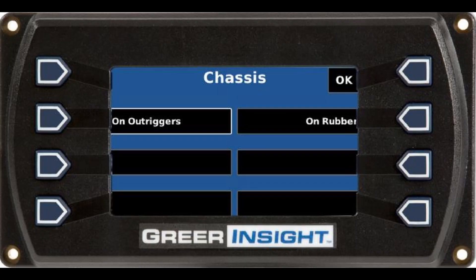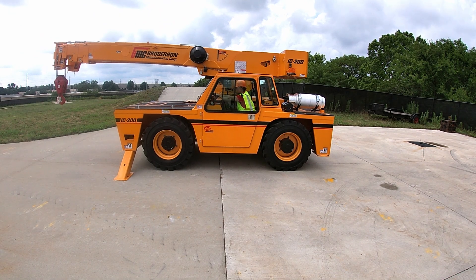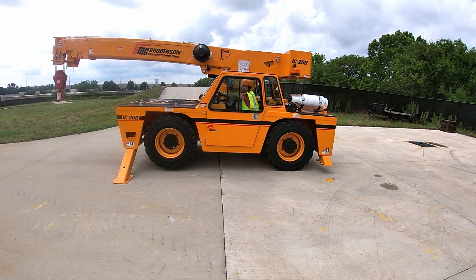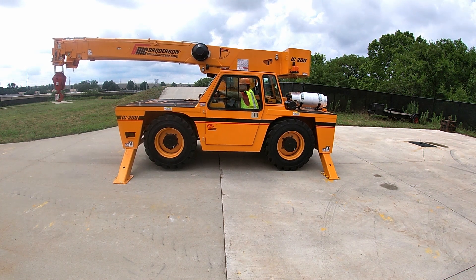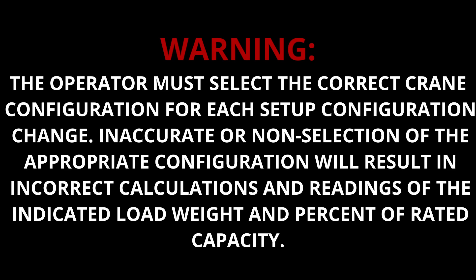The crane configuration defines the physical setup of the crane. The system setup defines the load parameters for each crane configuration. Configuration selection is required upon system power-up and can be changed anytime there is a change to the physical configuration of the crane. The operator must select the correct crane configuration for each setup change, as inaccurate or non-selection will result in incorrect calculations and readings of the indicated load weight and percent of rated capacity.